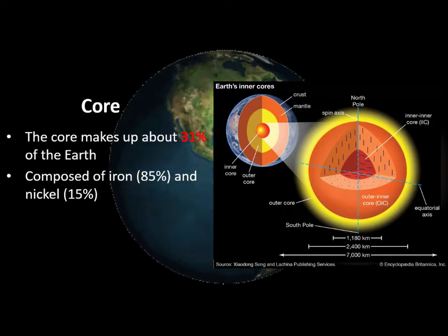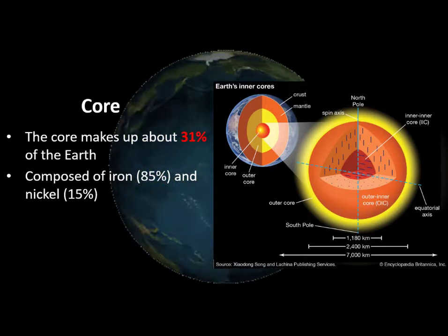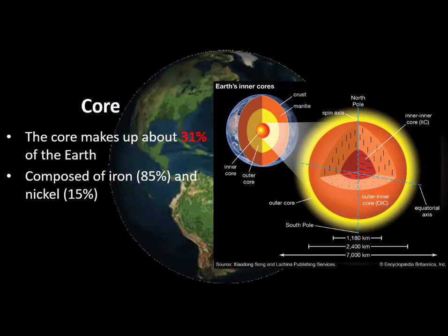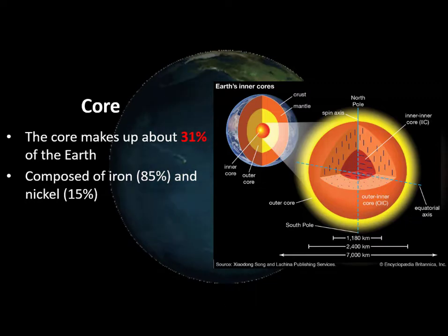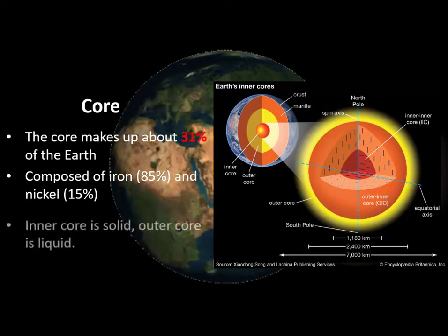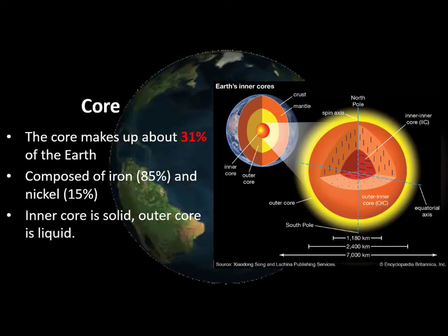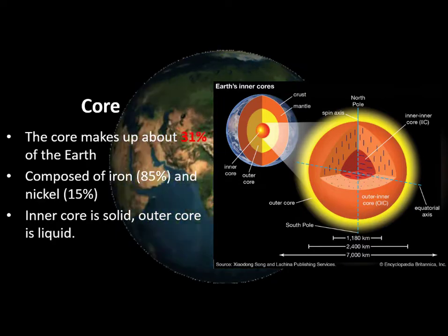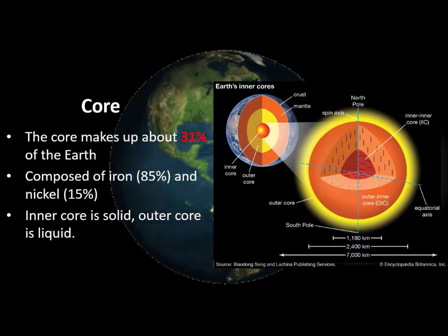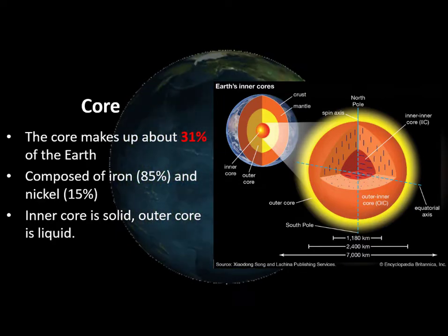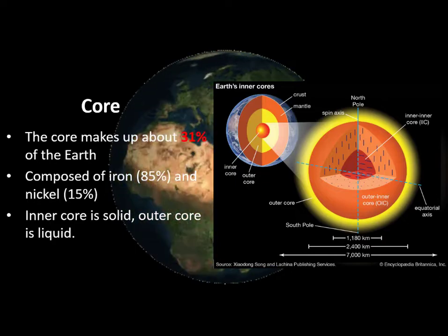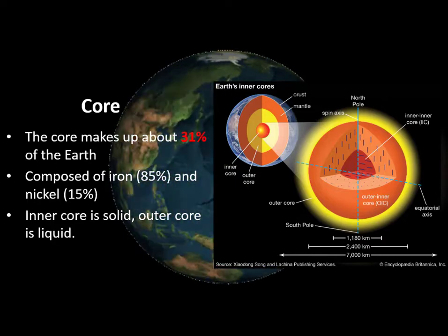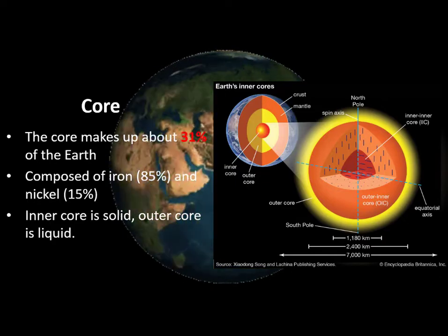Calculations indicate that the core is about 85 percent iron metal, with nickel metal making up much of the remaining 15 percent. The inner core is solid due to the pressure of the overlying rocks. The outer core is not under enough pressure to be solid, so it is liquid, even though it has a composition similar to the inner core.